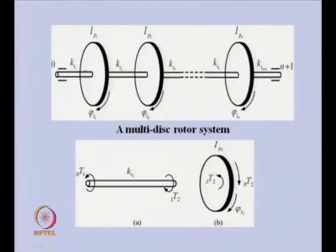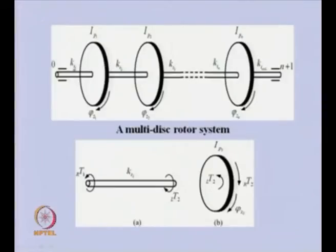Here we have a rotor which has a large number of discs — we can see there is discontinuity, so we can take any number of discs; let us say n number of discs are there. This whole shaft is supported on frictionless supports, and boundary conditions will come at the end of the problem.